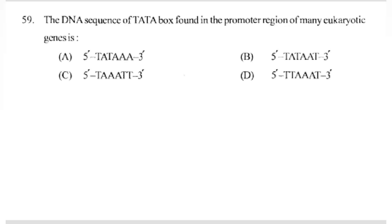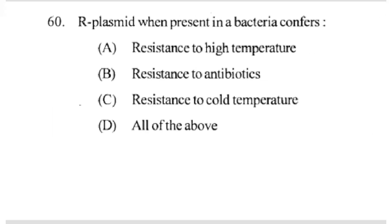The DNA sequence of TATA box found in the promoter region of many eukaryotic genes is — answer A part: 5'-TATAAA-3'. Question number 60: An R plasmid when present in a bacteria confers — answer B part: resistance to antibiotics. Thanks for watching. Bye. Thank you.